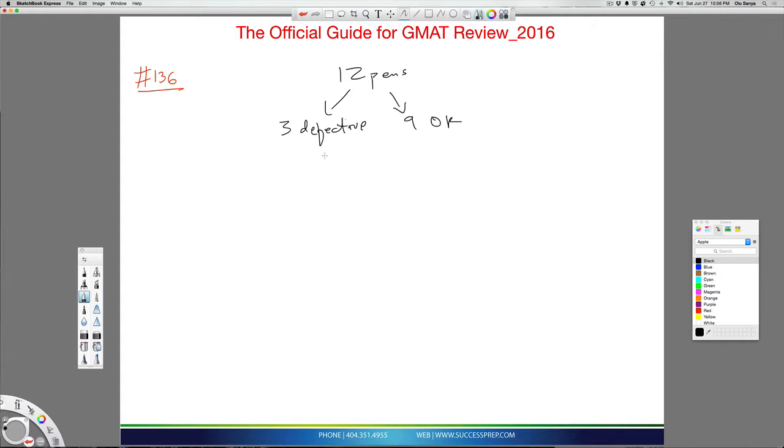So the question is asking, what is the probability that when a pen is picked, that it will not be defective? And we want to do that twice, meaning the first one we select is not defective, and the second one we select is not defective either.